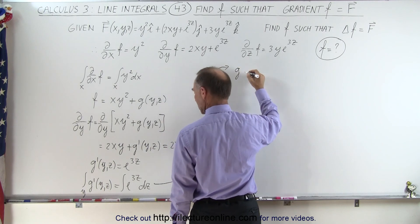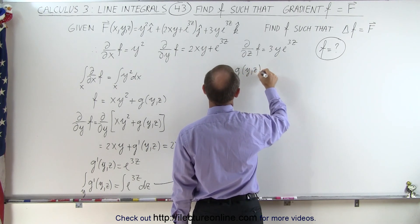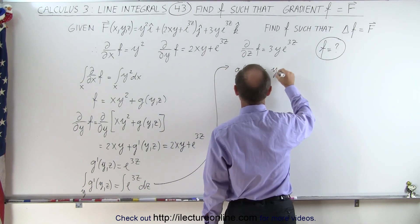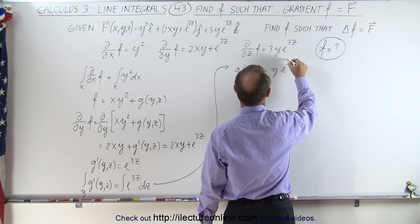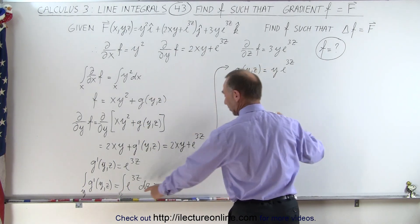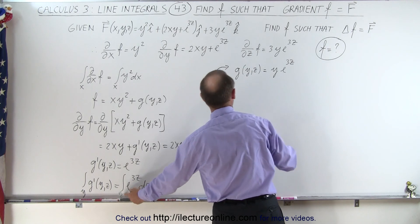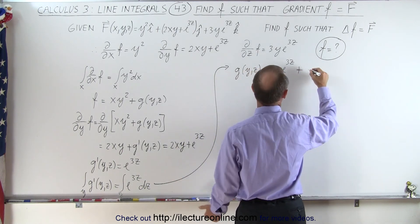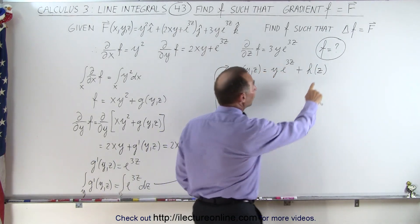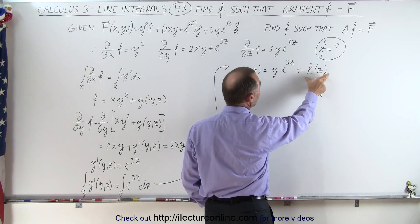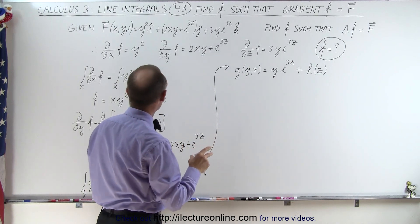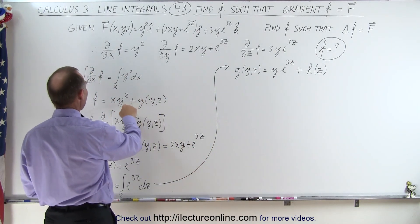On the left side we end up with G as a function of Y and Z. That is equal to Y times E to the 3Z, because we're taking the integral with respect to Y, so E to the 3Z is basically a constant. But since we're doing it with respect to Y, we should also have another function H of Z, because we can have another function of Z only such that when we take the partial derivative with respect to Y, it goes to 0. So we have to account for that possibility, and now we know what G of Y, Z is.